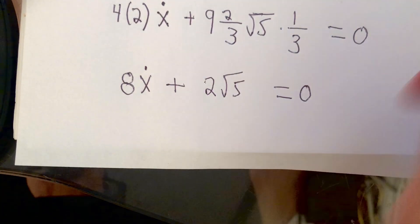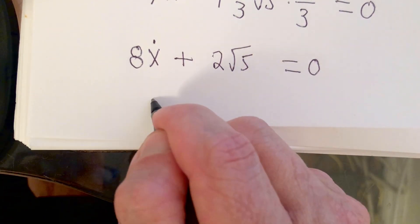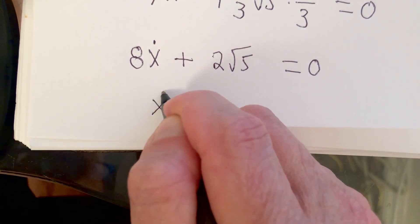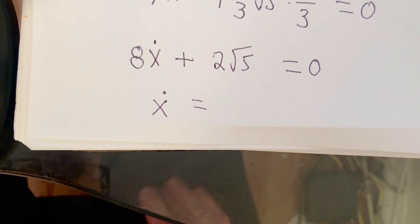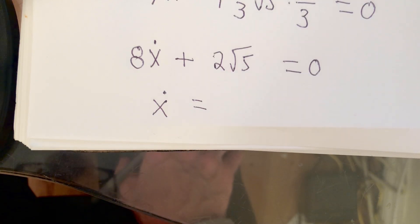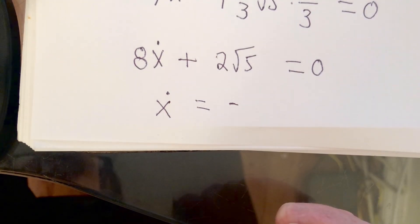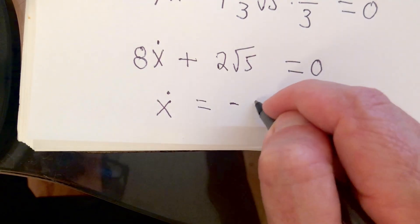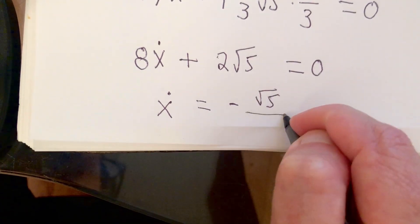So if I solve for x dot, what am I going to have? I'm going to have x dot equals, well, I'm going to subtract 2 times the square root of 5 from both sides, and then I'm going to divide both sides by 8. So what we're going to get is this. x dot, or dx dt, is going to be negative square root of 5 over 4.